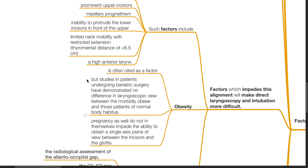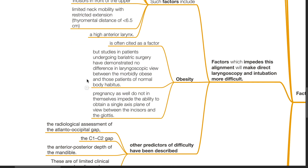Obesity is often cited as a factor, but studies in patients undergoing bariatric surgery have demonstrated no difference in laryngoscopic view between the morbidly obese and those of normal body habitus. Pregnancy also does not in itself impede the ability to obtain a single axis plane of view between the incisor and the glottis.